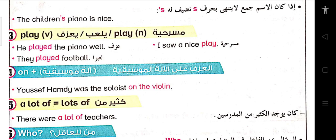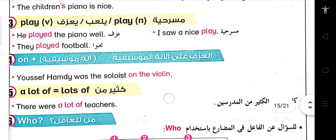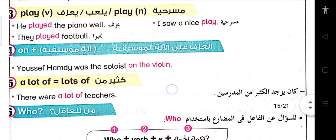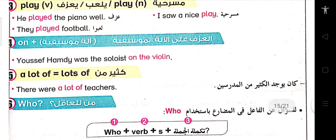السؤال باستخدام كلمة الاستفهام who. Who معناها من للعاقل، والعاقل يمكن أن يكون subject or object. Let's talk about who if we wanted to ask about a subject: we have to remove the subject and put who instead, complete the sentence as it is, then put a question mark.